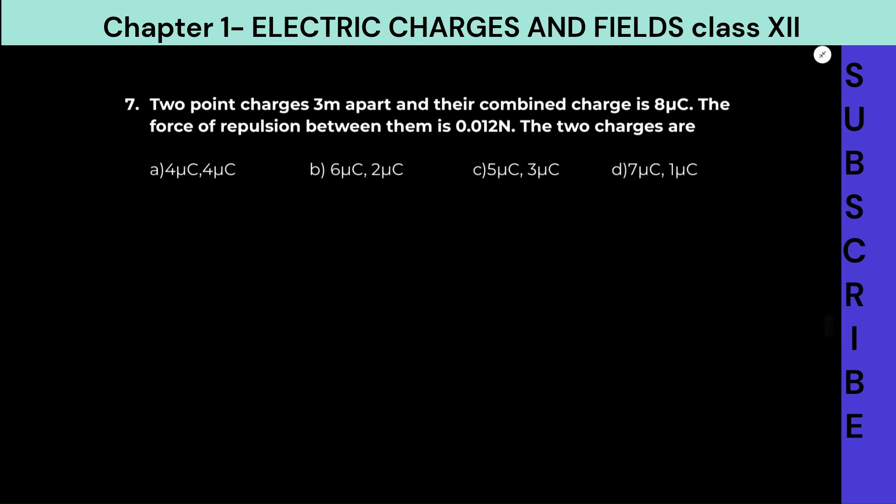Question number 7 says two point charges, three meters apart and their combined charge is 8 microcoulombs. So let us say there are two charges, one is placed at A, one is placed at B and let us call it as Q1 and Q2. They are placed at what distance? Three meters apart.